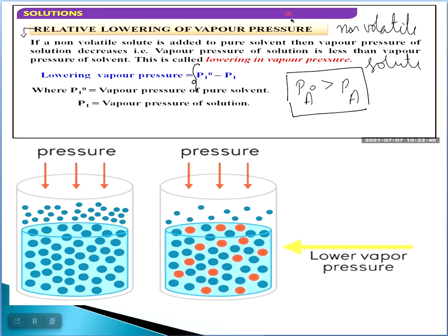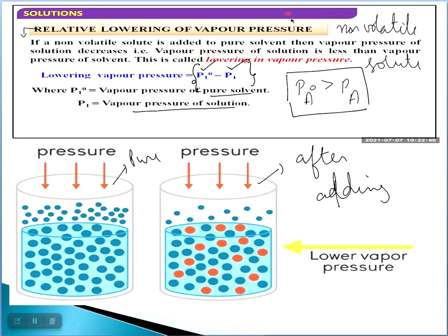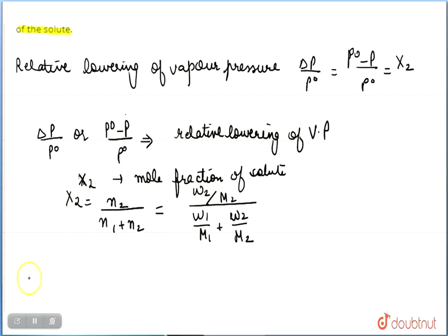We find the difference: P1° minus P1. P1° is the vapor pressure of the pure solvent, and P1 is the vapor pressure of the solution. You can see in the diagram — here there are only solvent particles (pure solvent), and here after adding the non-volatile solute, solute particles are added. They block the solvent particles from vaporizing, so vapor pressure is lowered.